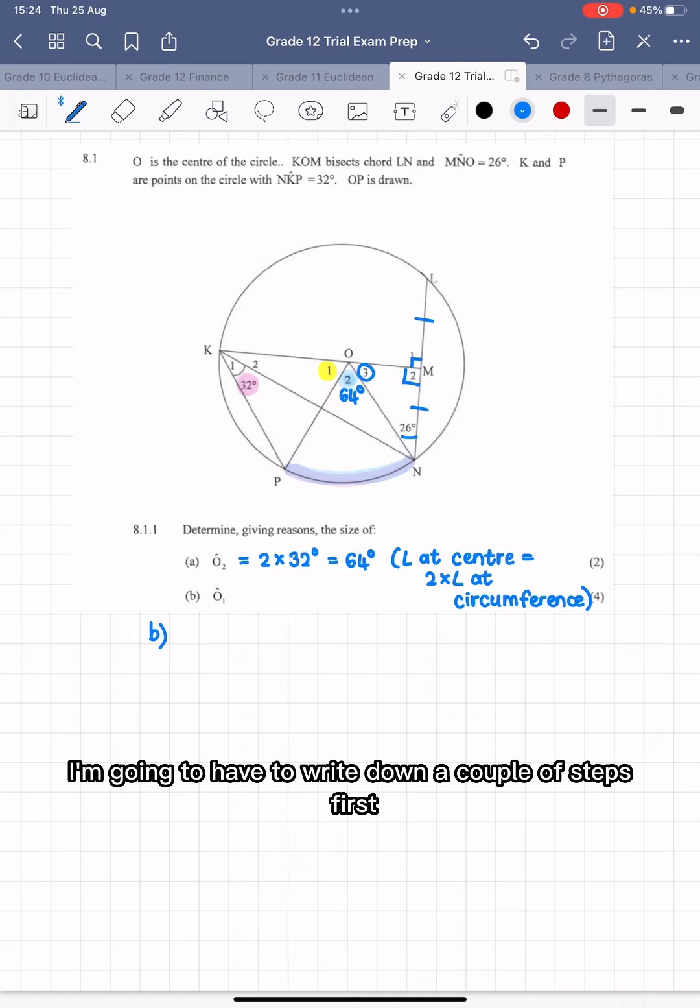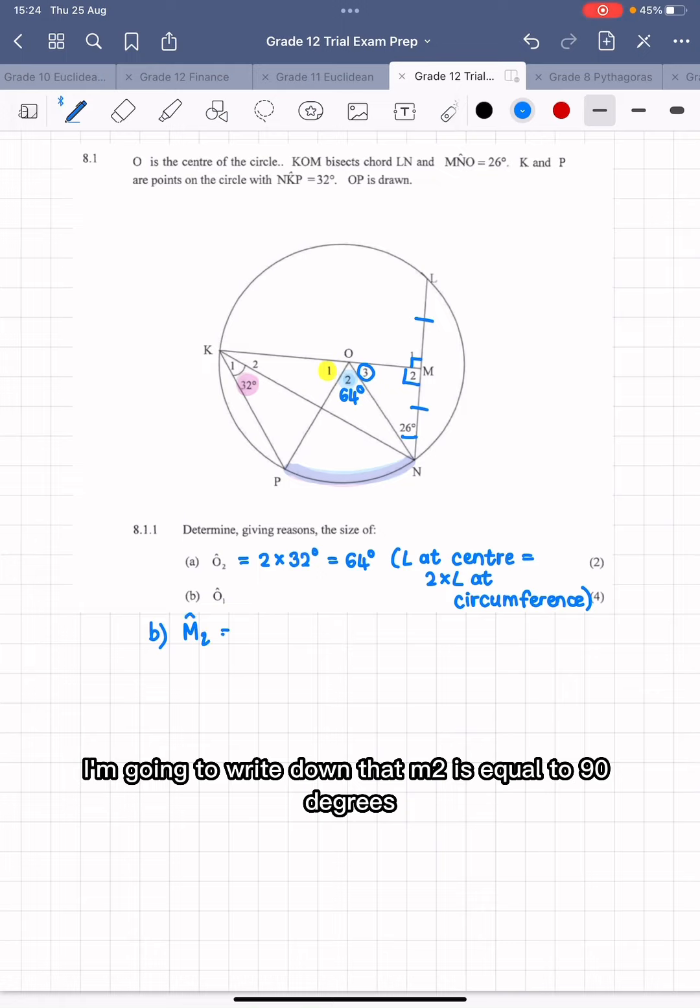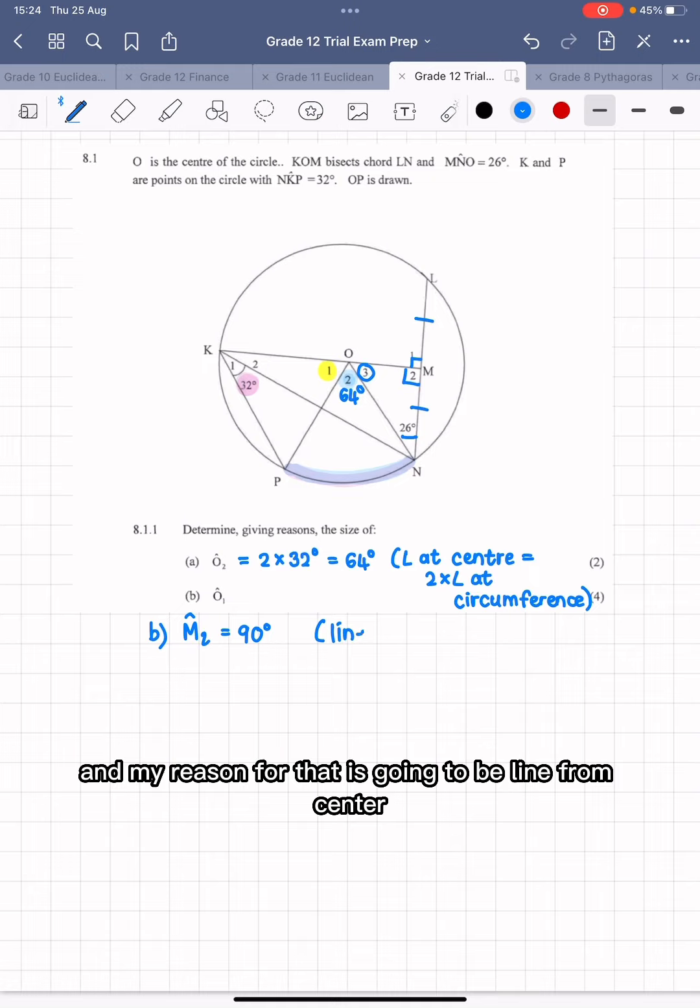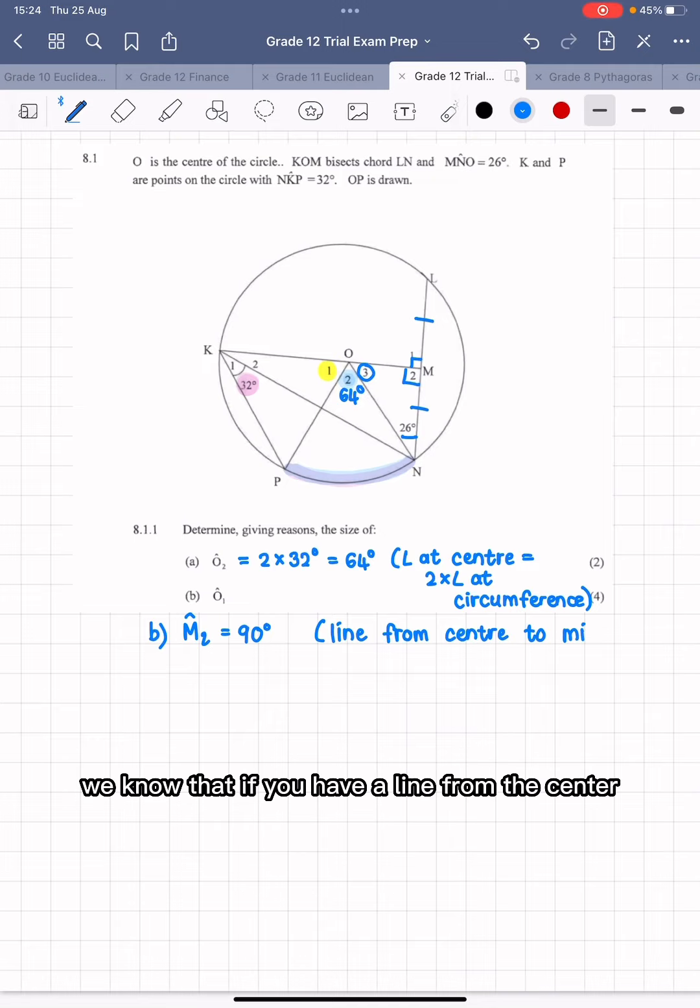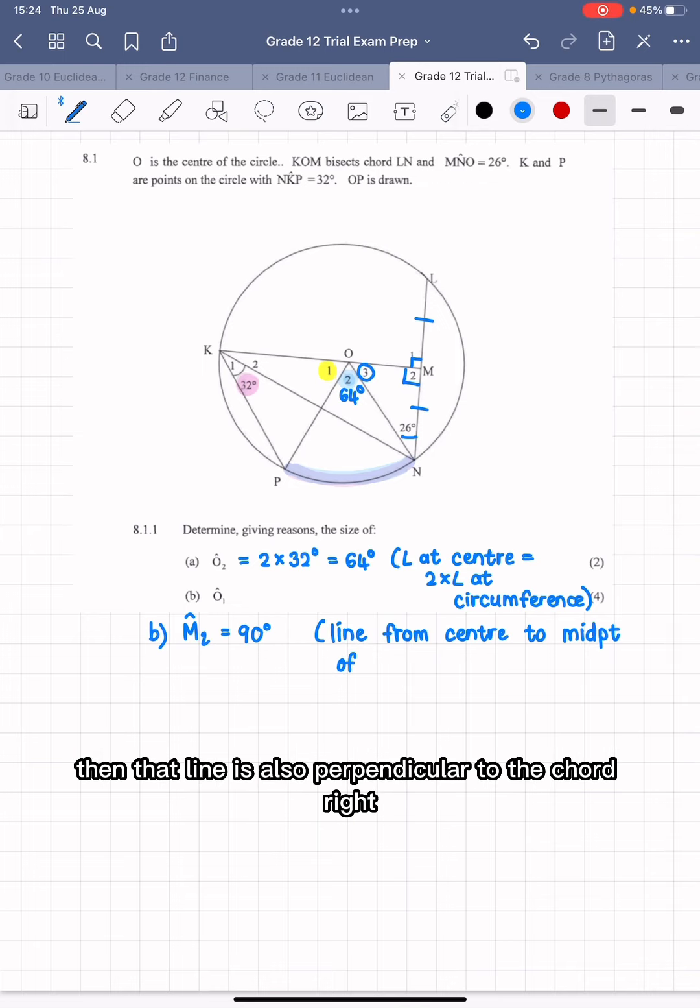First, I'm going to write down that M2 is equal to 90 degrees, and my reason for that is going to be line from center to midpoint of chord. We know that if you have a line from the center to the midpoint of a chord, then that line is also perpendicular to the chord. So that is our way of proving that M2 is 90.